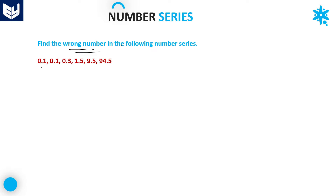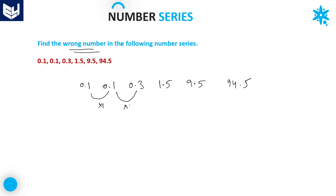See here. The first number is 0.1, next is 0.1, then 0.3, after that 1.5, then 9.5, and finally 94.5. Now, the logic being applied here: from 0.1 to 0.1 is ×1. Then 0.1 × 3 = 0.3. Next, 0.1 × 5 = 0.5 — wait, 0.1 × 5 = 0.5, but we have 1.5. So you get the idea: the pattern is ×1, ×3, ×5.